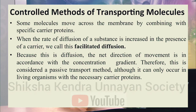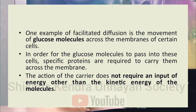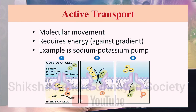Facilitated diffusion is another type of passive transport — a more controlled method of transporting molecules. It also follows the concentration gradient, moving molecules from higher to lower concentration, but specific carrier proteins are involved. These carrier proteins help the movement of molecules into or out of the cell. For example, glucose molecules require specific proteins to carry them across the membrane of certain cells. Facilitated diffusion does not require any input of energy other than the kinetic energy of the molecules.